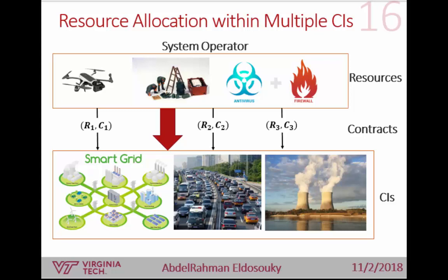We assume a system operator that manages multiple critical infrastructures and wants to improve the total system resilience. The system operator allocates resources to improve the resilience of individual critical infrastructures. These resources can include monitoring resources such as drones to reach hard-to-access areas, surveillance systems, maintenance crews for quick repairs, or cyber security resources for cyber components.